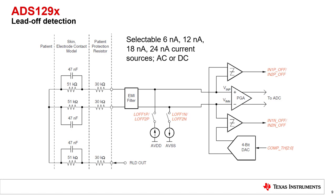In AC leadoff, the same current sources inject an out-of-band square wave current onto the patient. In that scenario, the measured voltage corresponding to the leadoff current source frequency is analyzed to determine the connection between the patient and electrode.